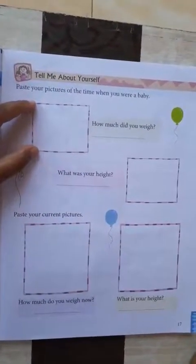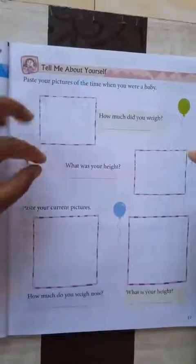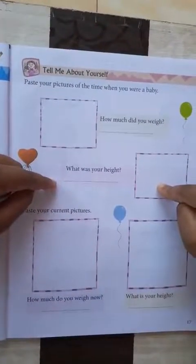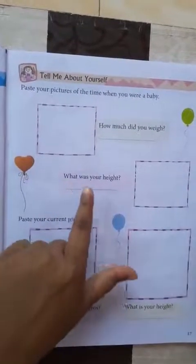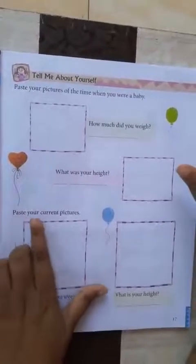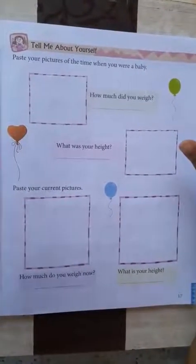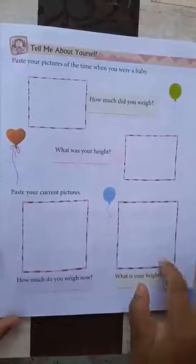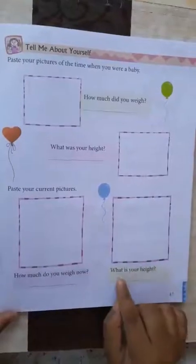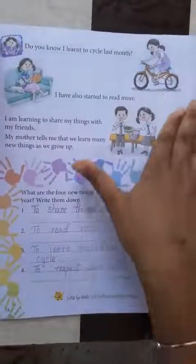You have to paste your picture from when you were a baby and write your weight at that time. You also have to write what your height was when you were a baby. Then paste your current picture and write your present weight and present height in the respective boxes.